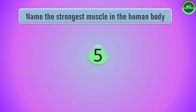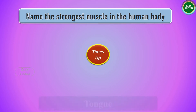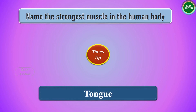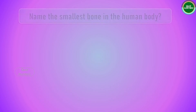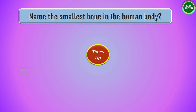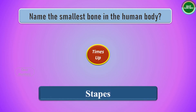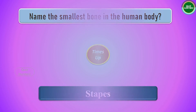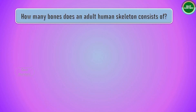Next question: name the strongest muscle in the human body. The answer is the tongue. Next question: name the smallest bone in the human body. The answer is the stapes.